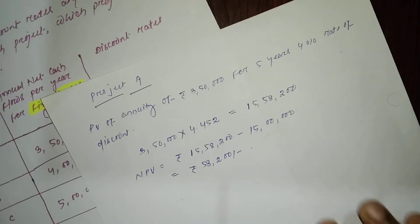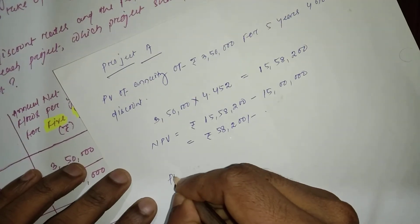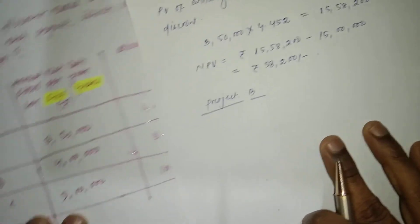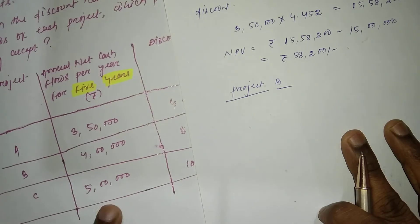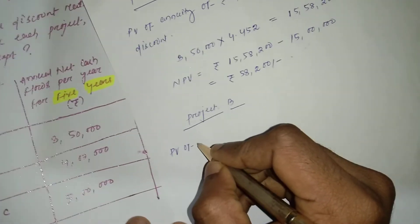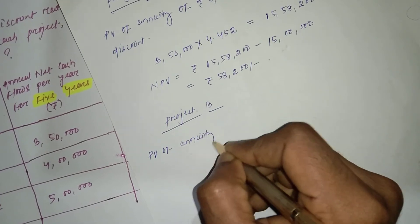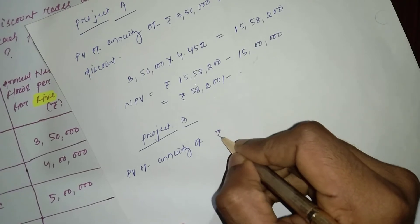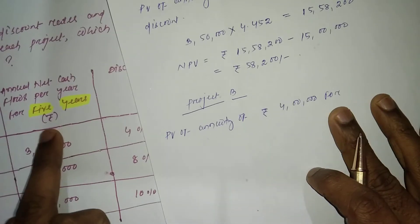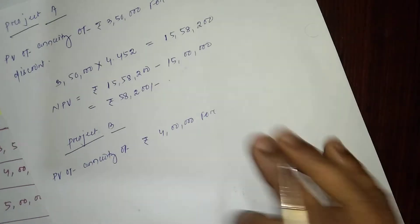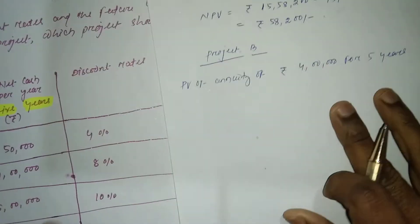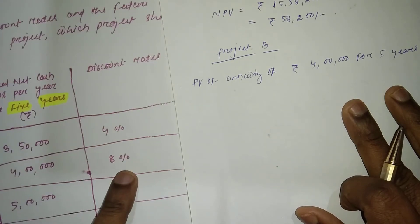For Project B similarly, the annual net cash flow for five years is four lakh. So present value of annuity of rupees four lakh for five years, with a discount rate of eight percent for Project B.